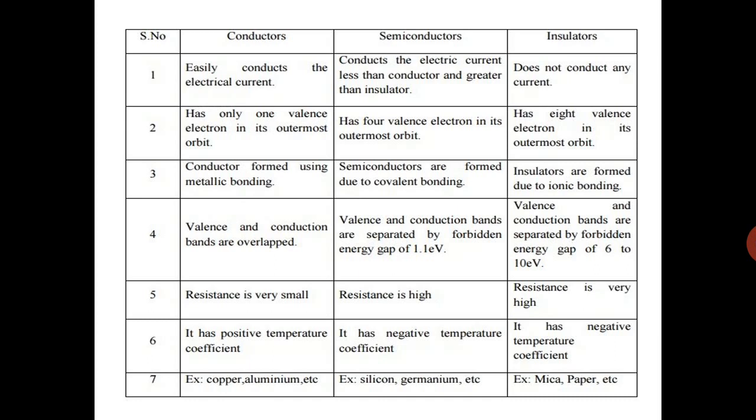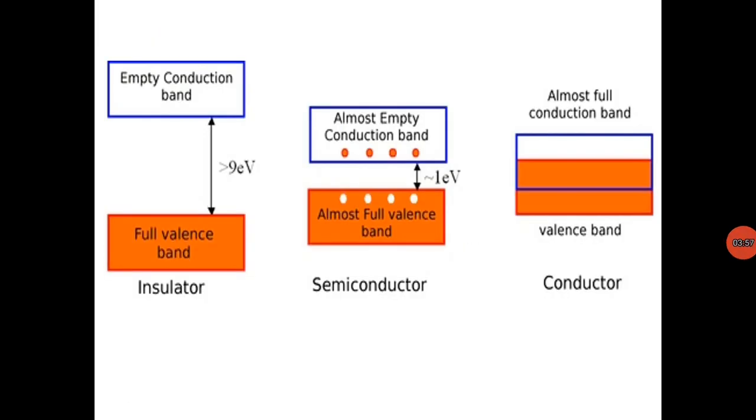Fourth one, valence and conduction bands are overlapped. In semiconductor, valence and conduction bands are separated by forbidden energy gap of 1.1 electron volt. Valence bands and conduction bands are separated by forbidden energy gap of 6 to 10 electron volt. In this diagram, we can see that insulator, semiconductor and conductors. Empty conduction band and full valence band. There is an energy gap between conduction band and valence band that is equal to or more than 9 electron volts. In semiconductor, that difference is nearly about 1 electron volt. And in conductor, conduction band and valence band are overlapped.